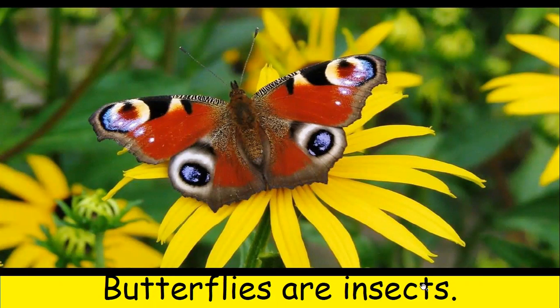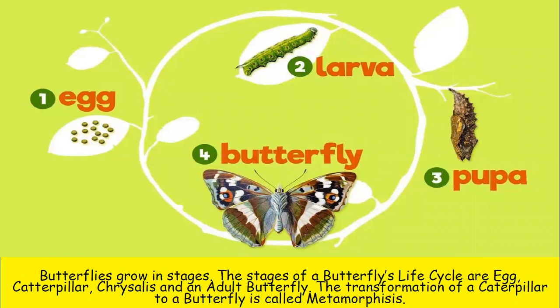Butterflies are insects. Butterflies grow in stages. The stages of a butterfly's life cycle are egg, caterpillar or larva, chrysalis or pupa, and an adult butterfly — so there are four stages. The transformation of a caterpillar to a butterfly is called metamorphosis.